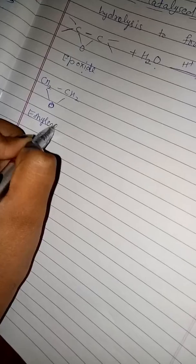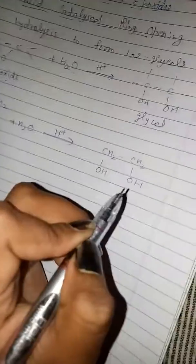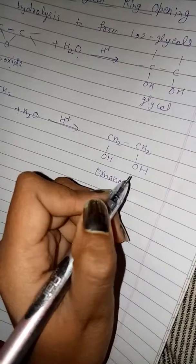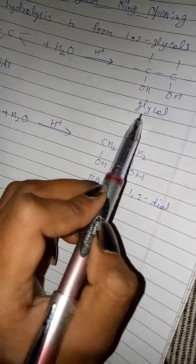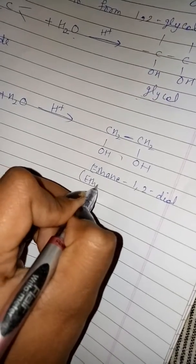We can also take an example: CH₂–CH₂ — this was the epoxide, ethylene oxide. We will take ethylene oxide with methylene and oxygen attached. In the presence of water, that is hydrolysis. Then our two carbons remain as they are, and one H is attached to each, and one OH is attached to each. So this can be called ethane-1,2-diol.